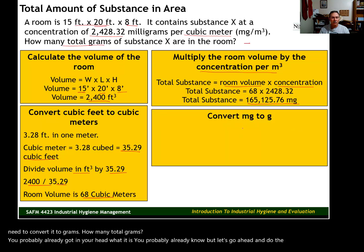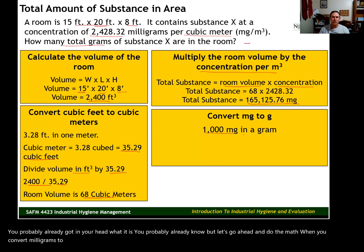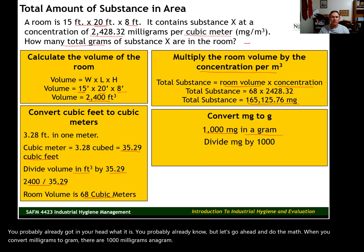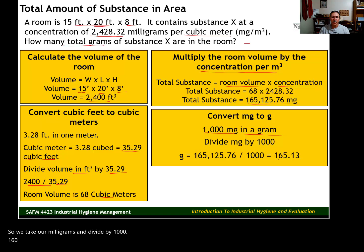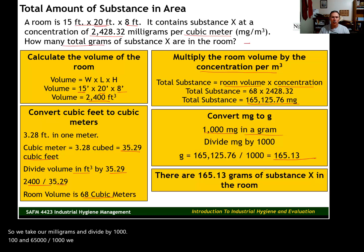We need to convert milligrams to grams. There are 1,000 milligrams in a gram, so we take our milligrams and divide by 1,000. 165,125.76 divided by 1,000 gives us 165.13 grams of substance X in the room.